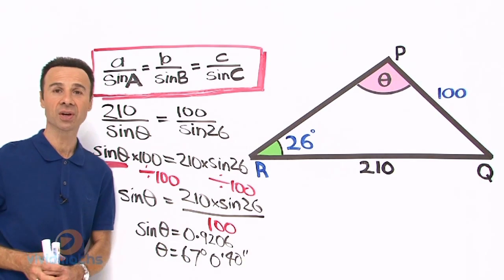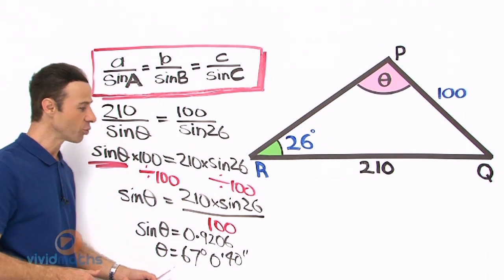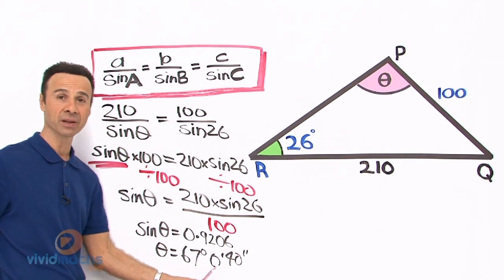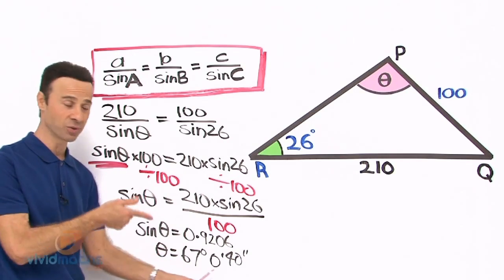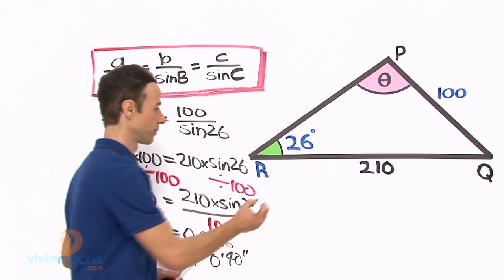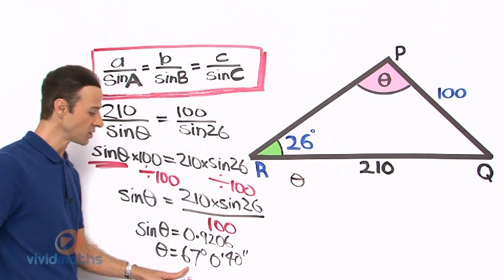0.9206 that can be rounded up to 67 degrees 1 minute because the 40 that is above 30. Let us do that. Let us write that over here so the answer we have for theta is 67 degrees 1 minute.